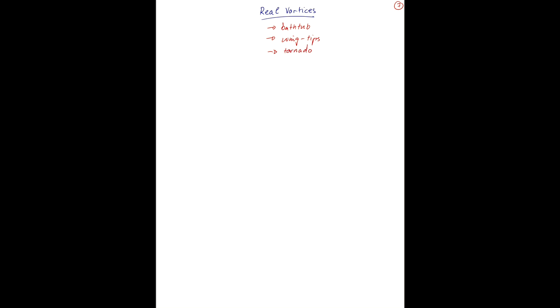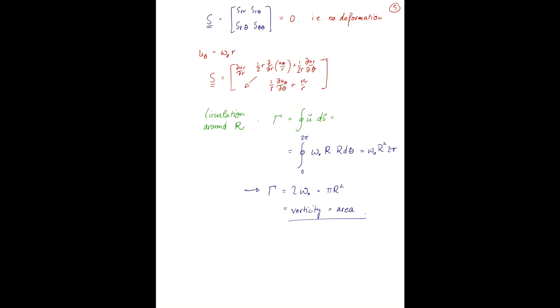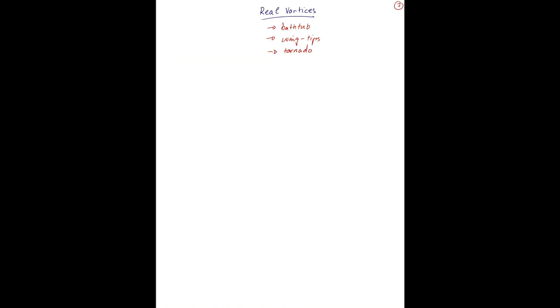Real vortices are neither the ideal vortex that we looked at last time, or the solid body rotation vortex that we had before. They are typically a combination, and there's two standard ways of combining them.